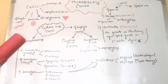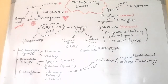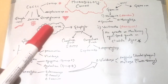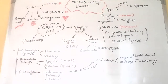Streptococcus occurs as a chain of cocci and causes diseases that originate in the throat or skin, including strep throat and scarlet fever. Staphylococcus and Streptococcus are gram-positive cocci. For gram-negative cocci, we have Neisseria and Veillonella. Neisseria meningitidis occurs in pairs of cocci.